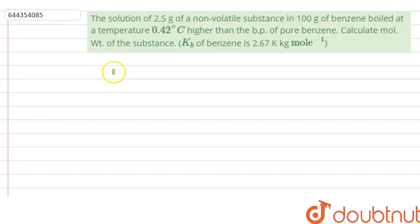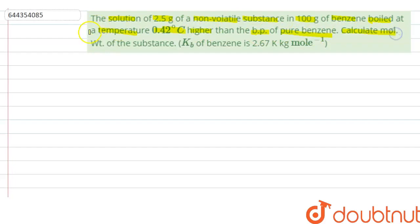Hello everyone, let us solve this question. The question says that the solution of 2.5 grams of a non-volatile substance in 100 grams of benzene boiled at a temperature of 0.42 degree Celsius higher than the boiling point of pure benzene. Calculate the molecular weight of the substance.